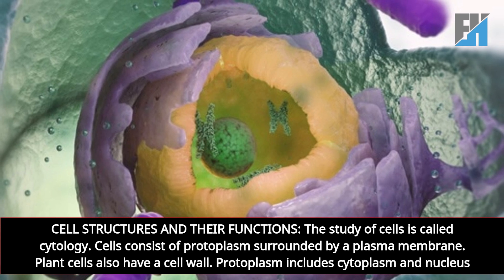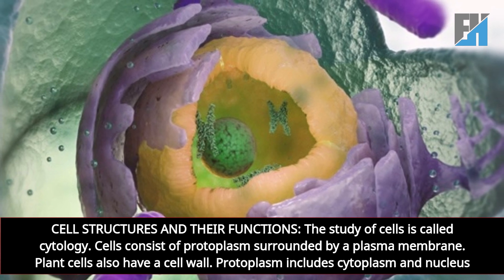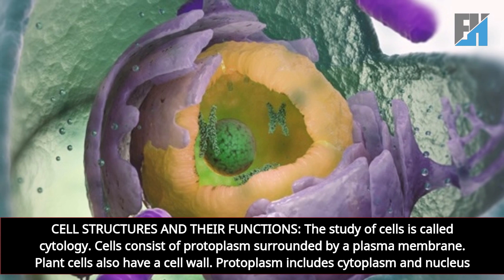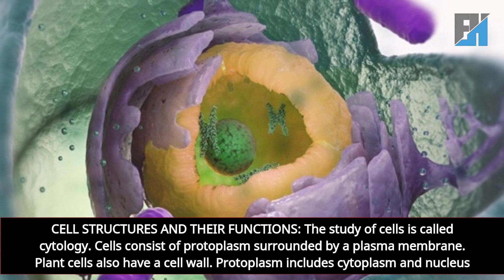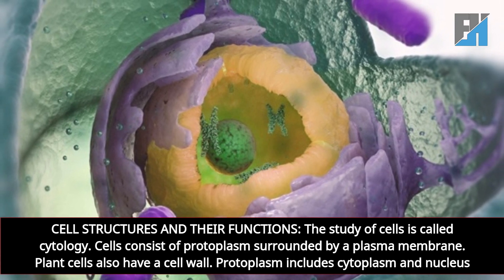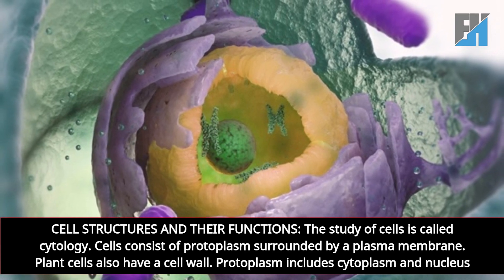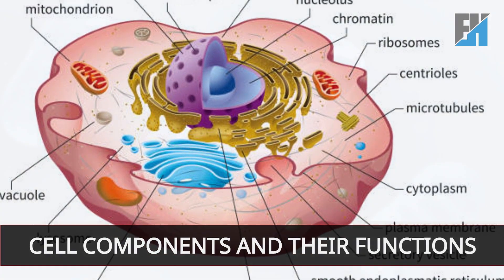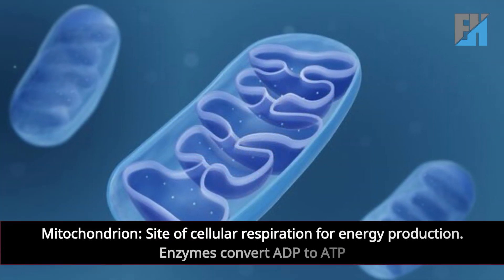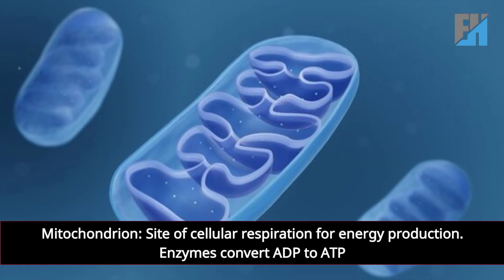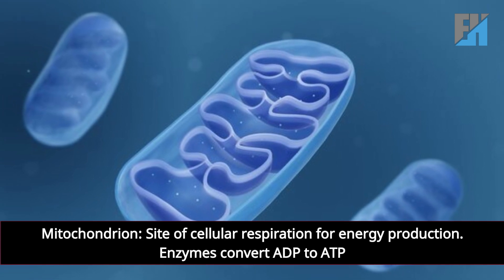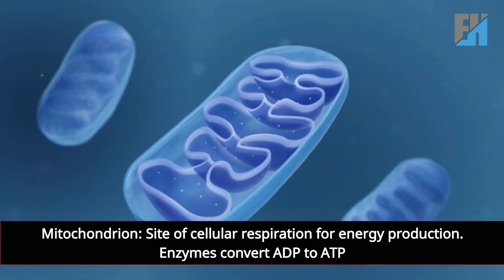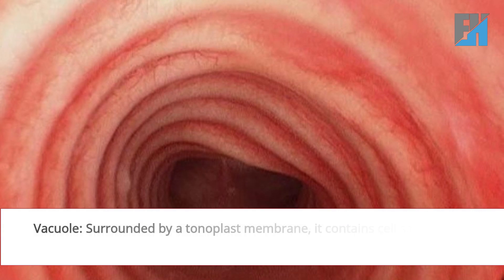The study of cells is called cytology. Cells consist of protoplasm surrounded by a plasma membrane; plant cells also have a cell wall. Protoplasm includes cytoplasm and the nucleus. The mitochondrion is the site of cellular respiration for energy production, where enzymes convert ADP to ATP.